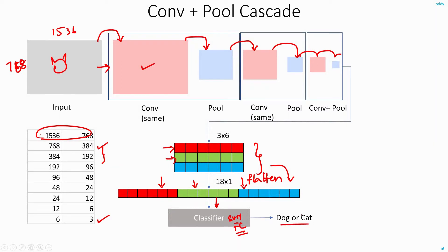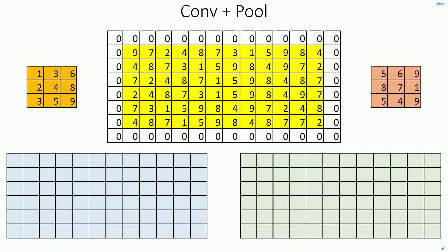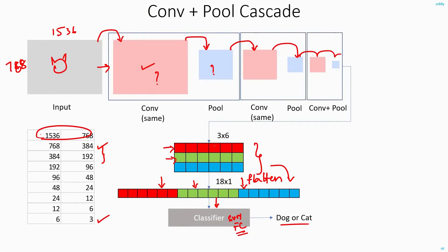This is a broad overview of how a convolutional neural network works. Things might seem hazy — you might be wondering why convolution is done and what the point of pooling is. We will see an actual example to build intuition for what we are doing and why. For now, the goal is to finish introducing all the techniques used in a CNN so that the rest of the discussion becomes clear.